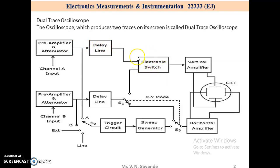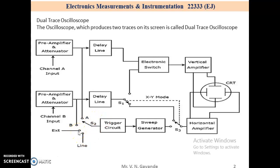With the help of an electronic switch, we can connect the delay line output of a specific channel A or B to the vertical amplifier. We can choose any one of four signals as a trigger input to the trigger circuit using switch S2. Those signals are: input signal A channel, B channel, external, or line input.